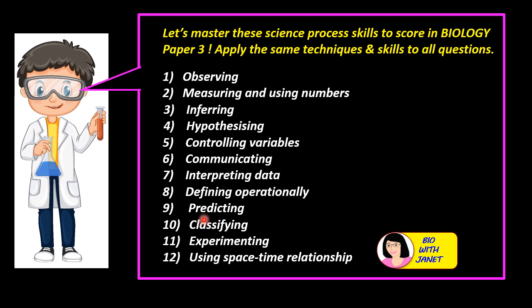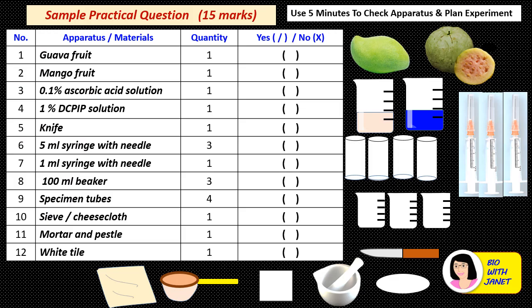The skills include observing, measuring, using numbers, inferring, hypothesizing, and so forth. There are 12 skills in total that you need to master in order to score for biology paper 3. After that, you can apply the same techniques and skills to all other paper 3 questions.